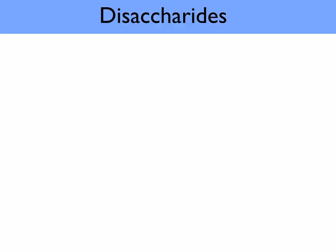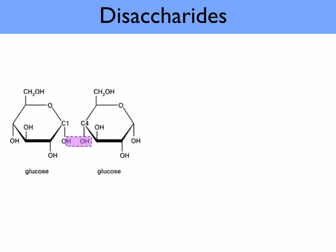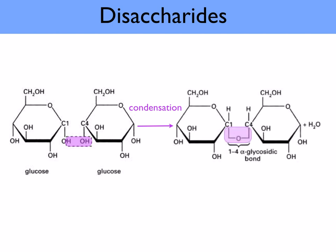When two monosaccharides join together, they form a disaccharide. The two monosaccharides can be the same or different. When they join, a molecule of water is removed — this is called a condensation reaction. The bond that is formed is called a glycosidic bond. We name the bond by stating the carbon atom numbers between which the bond is formed. In this case, it's between carbon 1 of the first molecule and carbon 4 of the second — so it's a 1,4 alpha glycosidic bond.